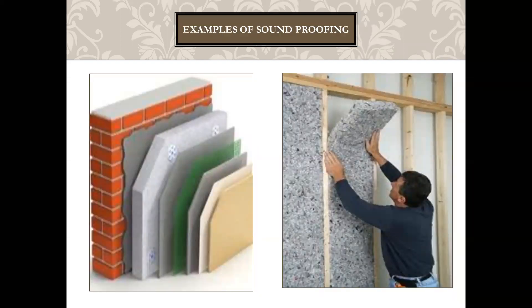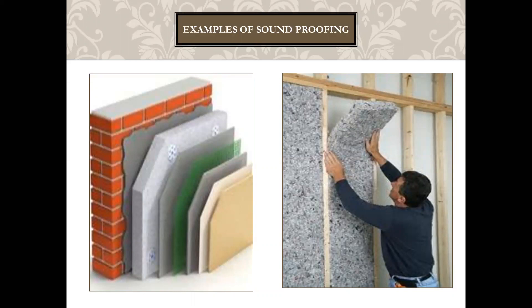You can see that styrofoam is being fitted onto a wall, which helps make the wall soundproof. Similarly, foam-like fabric is being placed between structures to make a room soundproof — sound cannot pass through to the next room. These soundproofing materials are used in theaters where movies are played, in halls and auditoriums, and even inside cars.